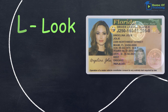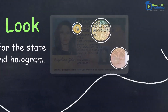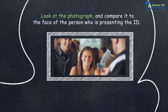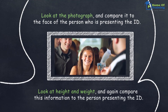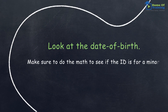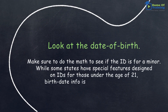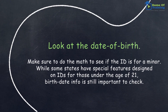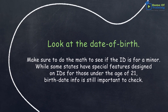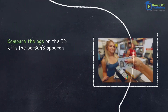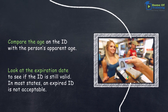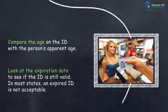L — Look. Look for the state seal and hologram. Look at the photograph and compare it to the face of the person who is presenting the ID. Look at height and weight and compare this information to the person presenting the ID. Look at the date of birth — make sure to do the math to see if the ID is for a minor. While some states have special features designed on IDs for those under the age of 21, birth date info is still important to check. Compare the age on the ID with the person's apparent age. Look at the expiration date to see if the ID is still valid — in most states, an expired ID is not acceptable.